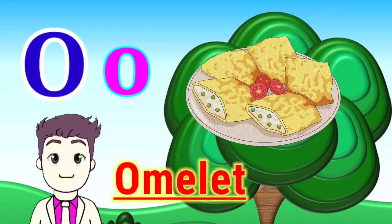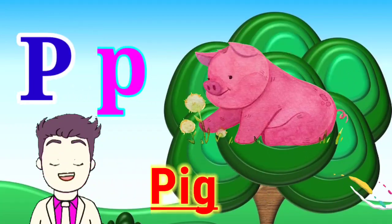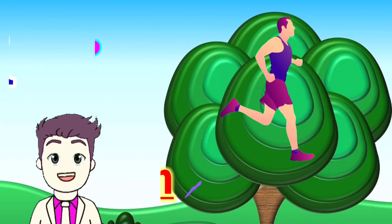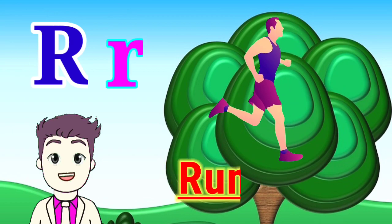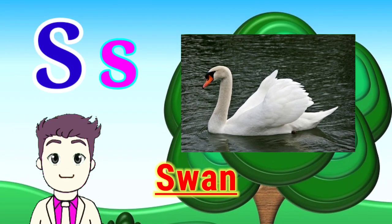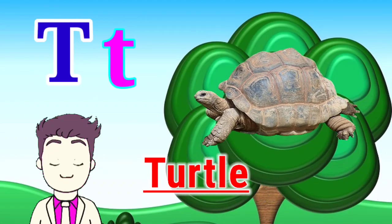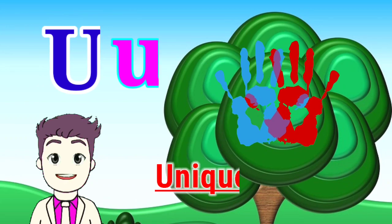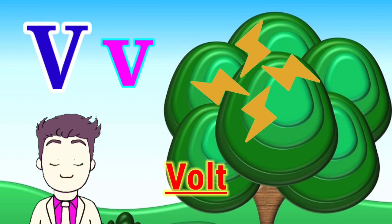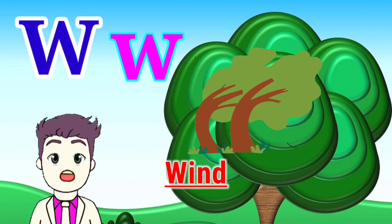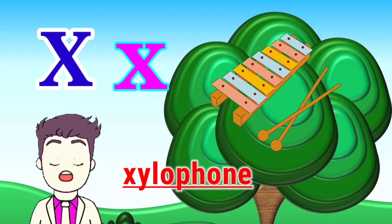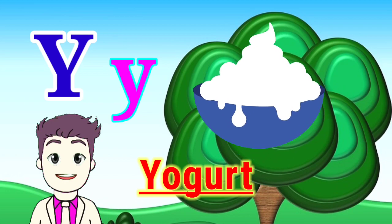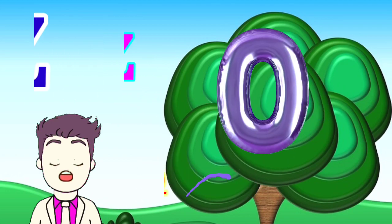O for omelette. P for pig. Q for cookie. R for run. S for sun. T for turtle. U for unique. V for vault. W for wind. X for xylophone. Y for yogurt. Z for zero.